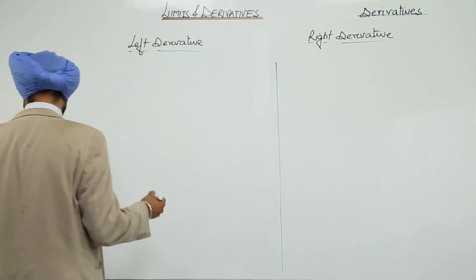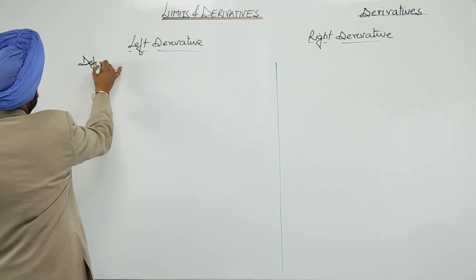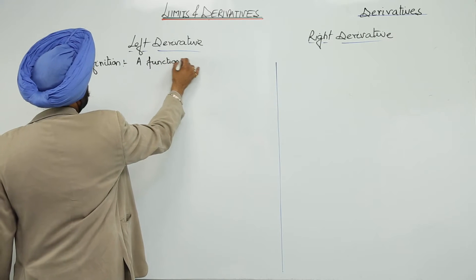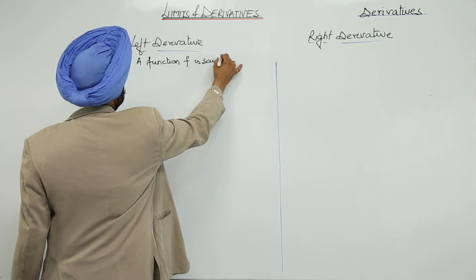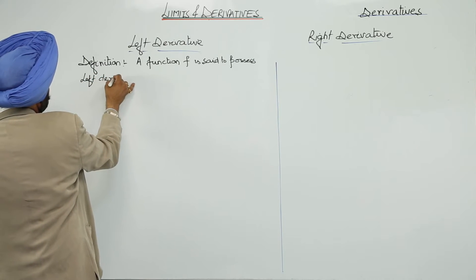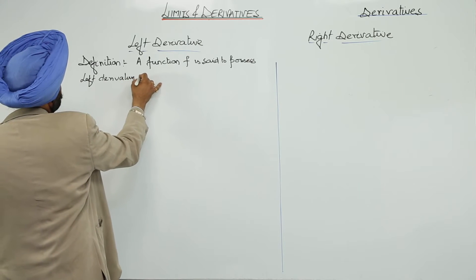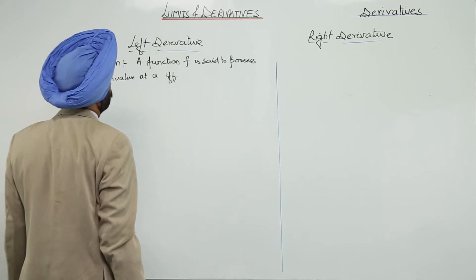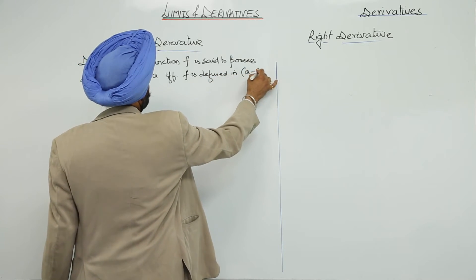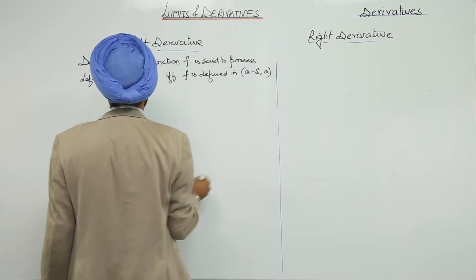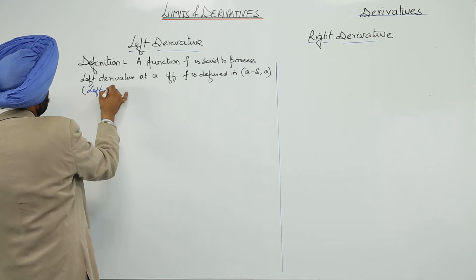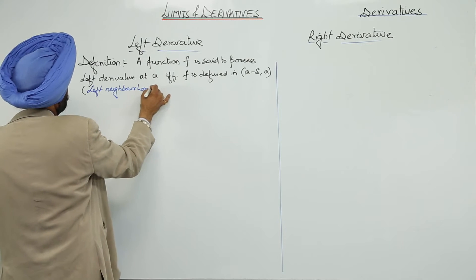Left derivative definition: a function f is said to possess left derivative at a if and only if f is defined in the interval (a minus delta, a). This interval is called the left neighborhood of a.